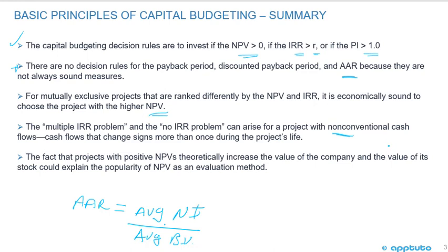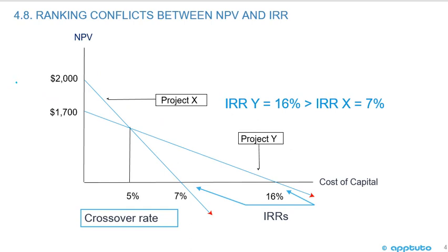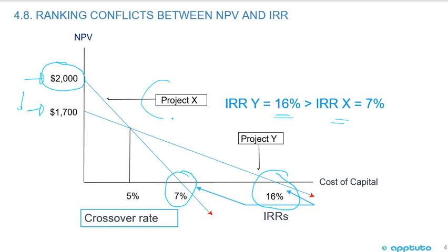Cash flows that change signs more than once during the project's life is the definition of non-conventional cash flows. Projects with positive NPV theoretically increase the value of the company and its stock, which explains the popularity of NPV. Looking at ranking conflicts: project X has an NPV of 2000 but an IRR of 7%, while project Y has an NPV of 1700 but a higher IRR of 16%. When there's a conflict between IRR and NPV, you choose the project with the higher NPV — so you would choose project X.